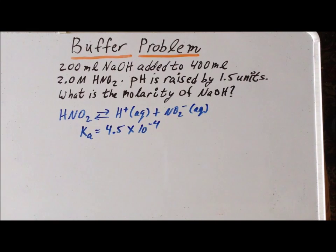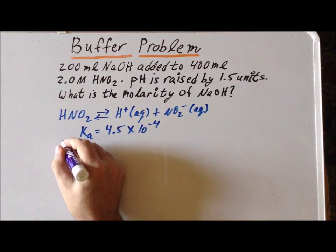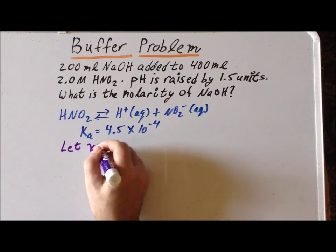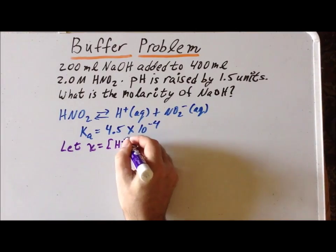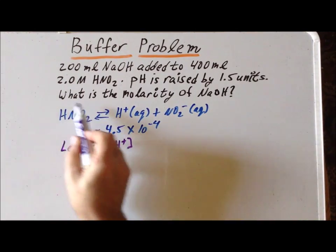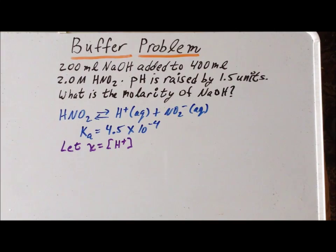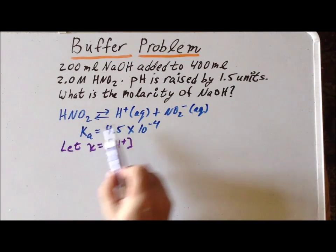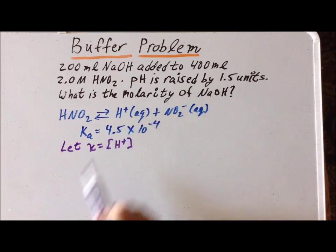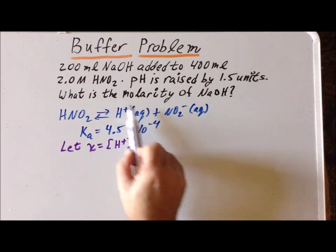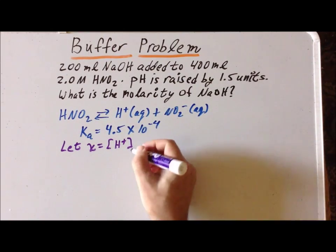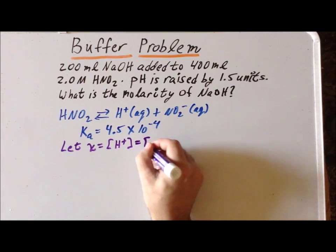Our first step now is to determine what the pH of that solution is by itself before we add any sodium hydroxide. Let's let X equal the concentration of H⁺. Since we're starting with just the nitrous acid, for every one mole of nitrous acid that dissociates, we get exactly one mole of H⁺ and one mole of nitrite ion. Specifically, the amount of H⁺ is identical to the amount of nitrite, so X is also equal to the concentration of nitrite.